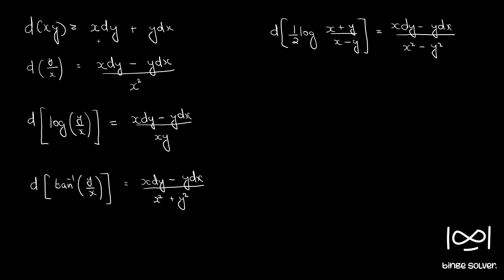These are some common differential forms that are useful. If you have d of xy, that equals x dy plus y dx. If your differential equation has x dy plus y dx, substitute it with d of xy. Similarly, d of y by x equals x dy minus y dx divided by x squared. And d of log y by x equals x dy minus y dx divided by xy. If the denominator is x squared plus y squared, you can use tan inverse y by x, which gives x dy minus y dx by x squared plus y squared.